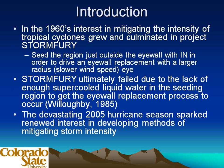In the 60s, there was a growing interest in the mitigation of the intensity of tropical cyclones, and this culminated in Project Storm Fury. The basic idea behind Storm Fury was to seed the region just outside the eye wall with ice nuclei in order to drive an eye wall replacement cycle, giving you a bigger eye with associated slower wind speeds through conservation of angular momentum. Storm Fury ultimately failed due to the lack of enough supercooled liquid water in the seeding region. More recently, the 2005 hurricane season sparked new interest in investigating methods of mitigating storm intensity.